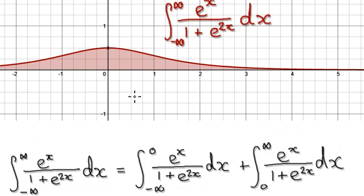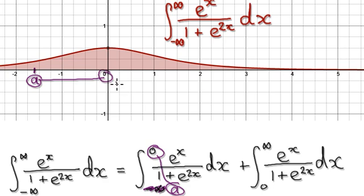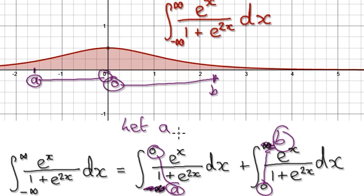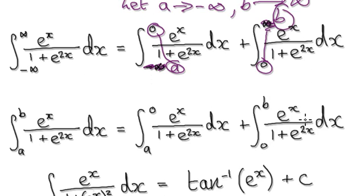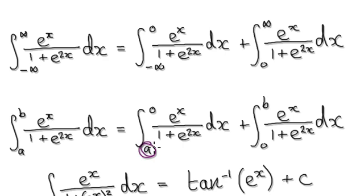Our normal routine would be to integrate from an arbitrary point — let's call it A — from A all the way to 0, and then from 0 all the way to an arbitrary point B. Then later on, we can let A head all the way to negative infinity, and we can let B move all the way to positive infinity. So it boils down to working it out from A to 0, and then from 0 to B.